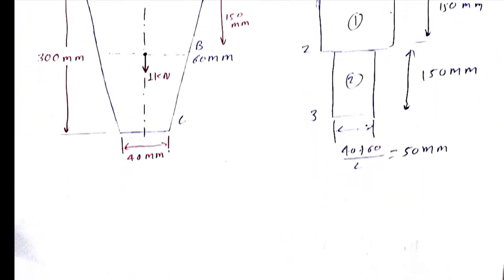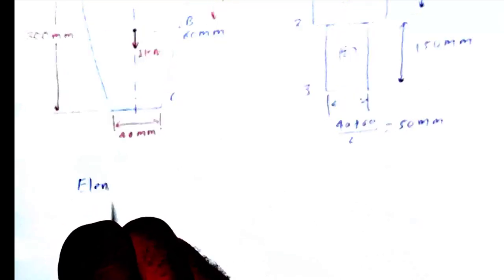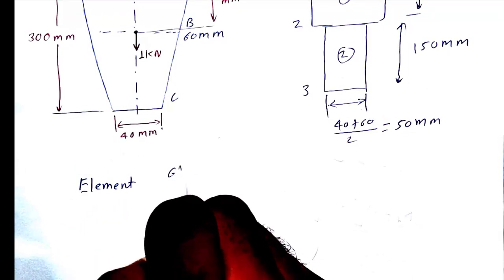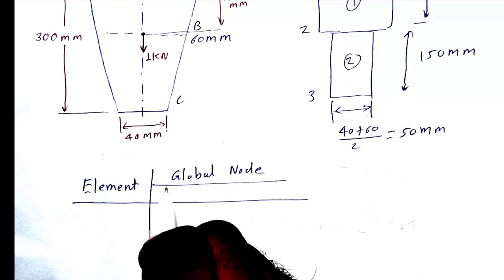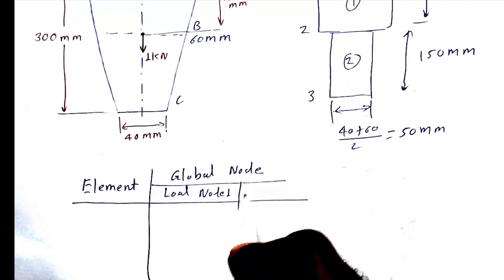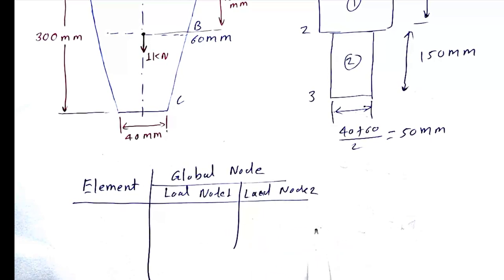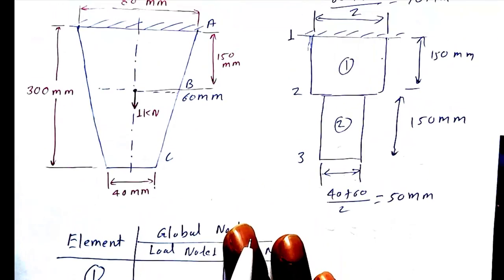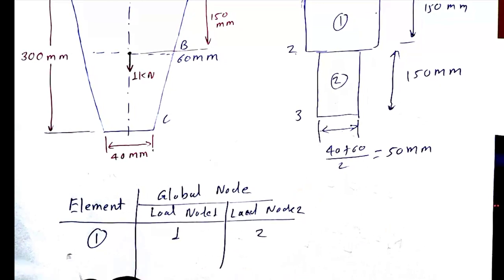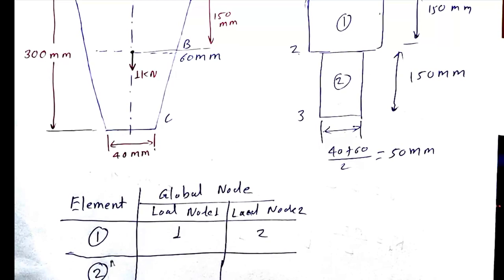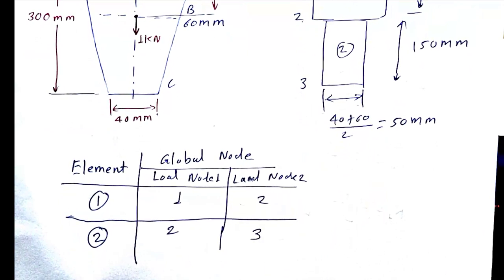Now we create the element connectivity table. The table lists element number, global nodes, and local nodes 1 and 2. Element 1 has connectivity 1 to 2, and element 2 has connectivity 2 to 3.